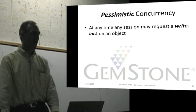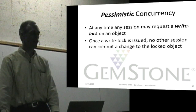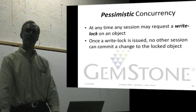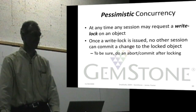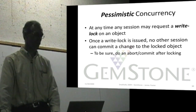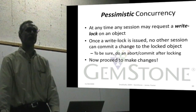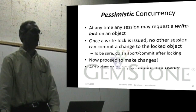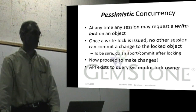Pessimistic concurrency: at any time, any session may request a write lock on any object. Once you've obtained the write lock, no other session can modify that object or commit a change to the object that you have locked. To make sure you have a fresh view, you generally want to commit or abort after you obtain the lock to ensure your view is the most recent of that object. You can then proceed to make changes confident that your changes will not produce a conflict, since no one else can make changes after you obtain the lock.